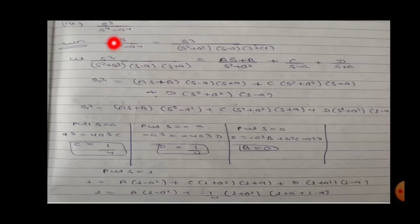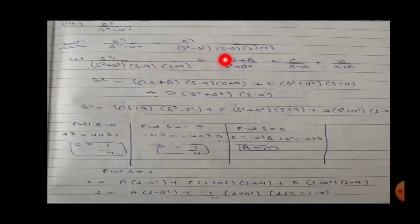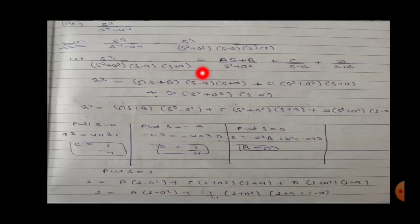Question 14: s³/(s⁴-a⁴). We factorize s⁴-a⁴ using a²-b² = (a+b)(a-b), giving (s²-a²)(s²+a²), and further (s-a)(s+a)(s²+a²). Writing into linear factors: A/(s+a)² plus C/(s-a) plus D/(s+a).